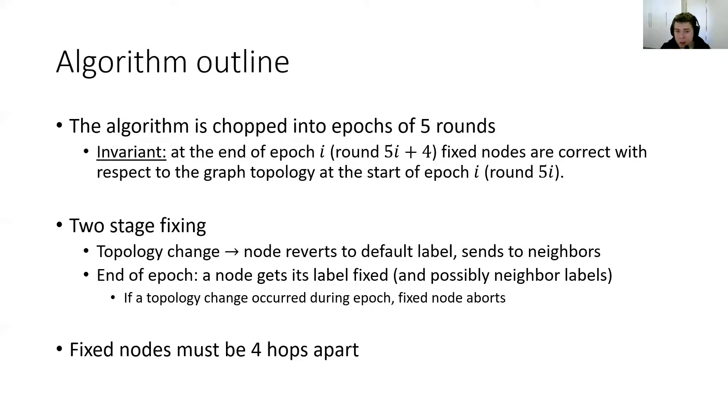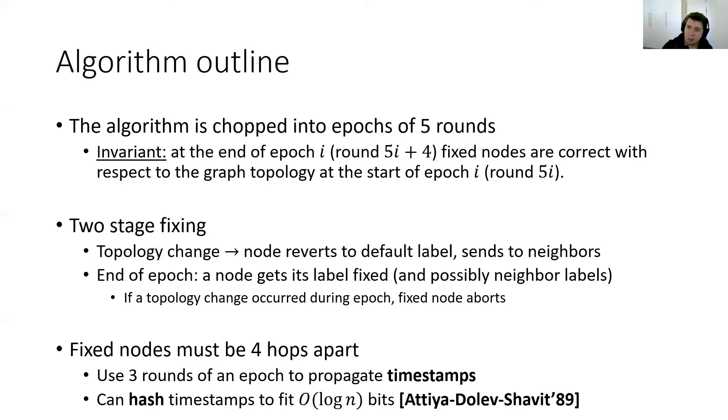Of course, if a topology change occurs during the epoch for nodes which were designated for a fix, then they just abort. This does not hurt the amortization because we can account for the additional delay by the batch we get from the new topology change which caused a node to abort. We also require that fixed nodes must be at least four hops apart for consistency. We obtain this by using three rounds of an epoch to propagate timestamps. Now timestamps may be unbounded in size, but we remedy this by hashing them into O of log n bits using a technique by Awerbuch, Goldberg, Luby and Plotkin from 1989.